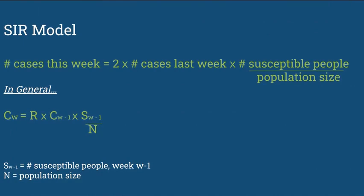So this is a more accurate equation that we can use to calculate how many cases there would be next week, and it's called the SIR model. This equation would be more accurate because we are taking into account how the number of susceptible people decreases over time.